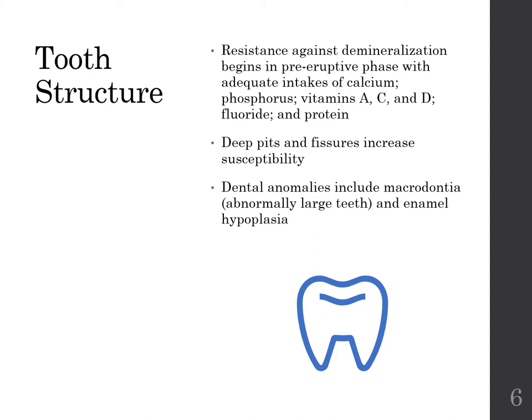Deep pits and fissures increase susceptibility — this is a genetic thing we can't control. This is the importance of stepping in and saying, now that their permanent molar has erupted, we need to put a sealant on it. Dental anomalies like macrodontia — abnormally large teeth — and enamel hypoplasia also play a role in plaque retention. If someone has abnormally large teeth, they probably have overlapping and crowding, which creates little nooks and crannies for plaque to adhere and makes it difficult for the patient to keep clean.